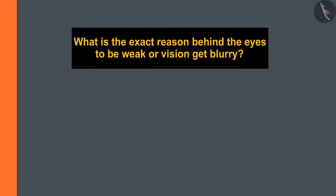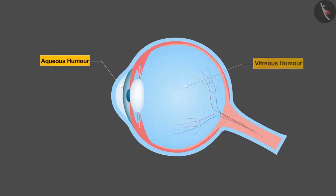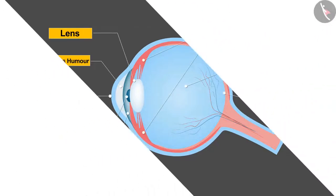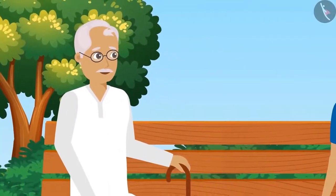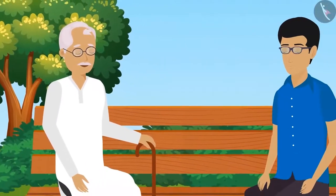But what is the exact reason behind the eyes to be weak or the vision to get blurry? In our previous video we learned about the various organs of the eyes, but weakening of which organ reduces the vision of eyes? Stay tuned till the end of the video to find answers to some of the similar questions.